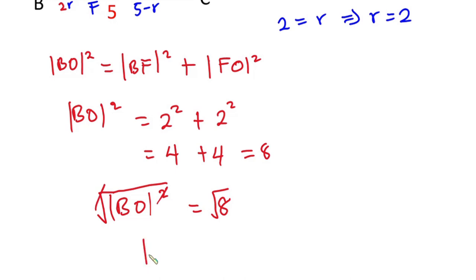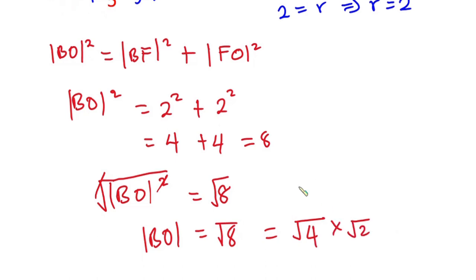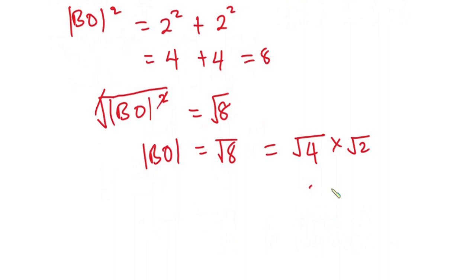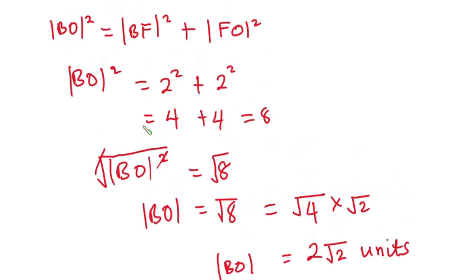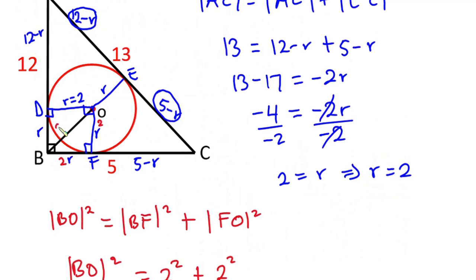Now let's make BO the subject by taking the square root on both sides. We have BO equals the square root of 8. And root 8 is the same as square root of 4 times square root of 2. Square root of 4 is 2, so we have 2 root 2. This implies that the length of BO is equal to 2 root 2 units.